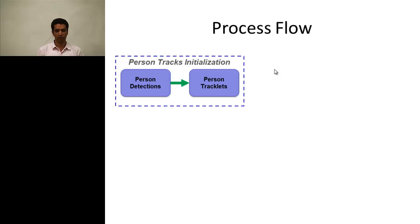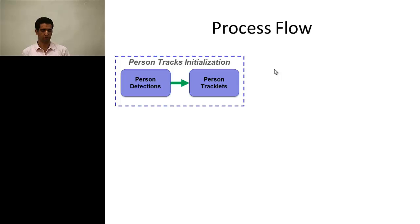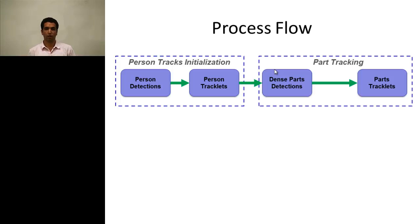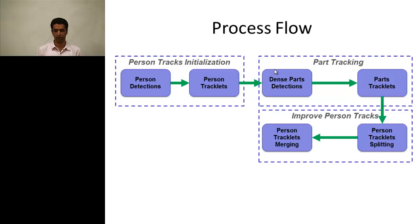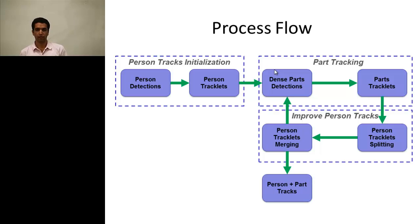In our method, we first initialize person tracklets using person detections and network flow optimization. Then we track all parts of the person within each tracklet and get the track of the parts. Using the track of the parts, we can improve the track of the person by splitting and merging person tracklets. We do this iteratively, and after all iterations we get the final person and part tracks.